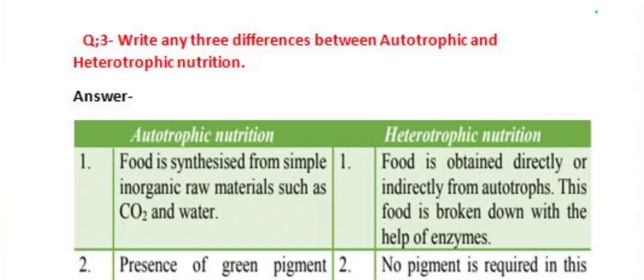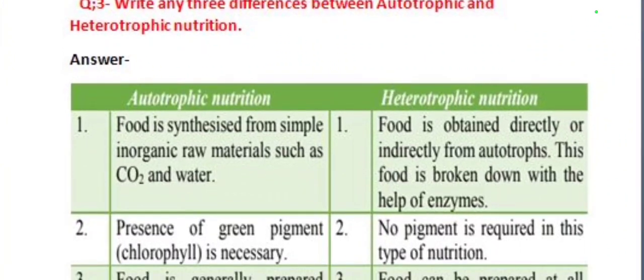Our next question is: write any three differences between autotrophic and heterotrophic nutrition. In autotrophic nutrition, food is synthesized from simple inorganic raw materials such as carbon dioxide and water. Whereas in heterotrophic nutrition, food is obtained directly or indirectly from autotrophs, and this food is broken down with the help of enzymes.